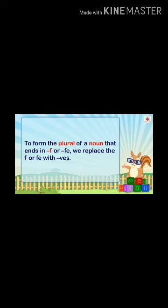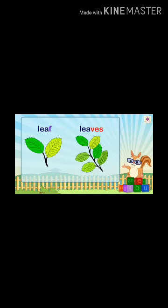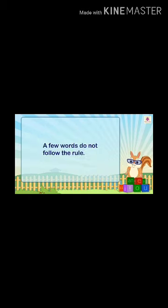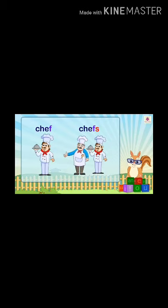To form the plural of a noun that ends in F or FE, we replace F or FE and add V-E-S. For example, 'leaf' — instead of F, we add VES — becomes 'leaves'. A few words do not follow this rule; like 'chef' becomes 'chefs' — only S is added.